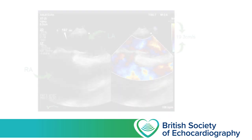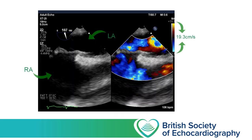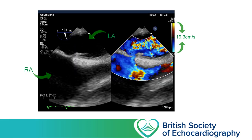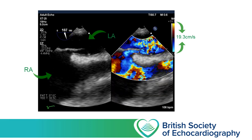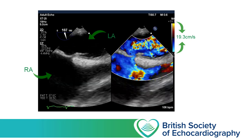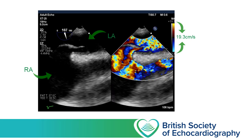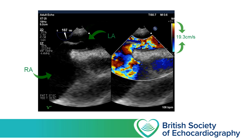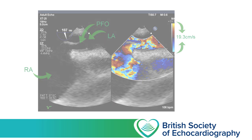Whilst we can't turn the scale up beyond the Nyquist limit, we can decrease the portion of the scale we're using if we're looking for particularly slow flow. In focused echo we rarely have to do this, but you should be aware it is possible. One situation where this is useful in comprehensive studies is to look for flow between the atria. Here we have a TOE bicaval view where the left atrium is in the near field and the right atrium in the far field. Flow between the atria is often relatively slow, so turning the scale down better demonstrates this PFO.